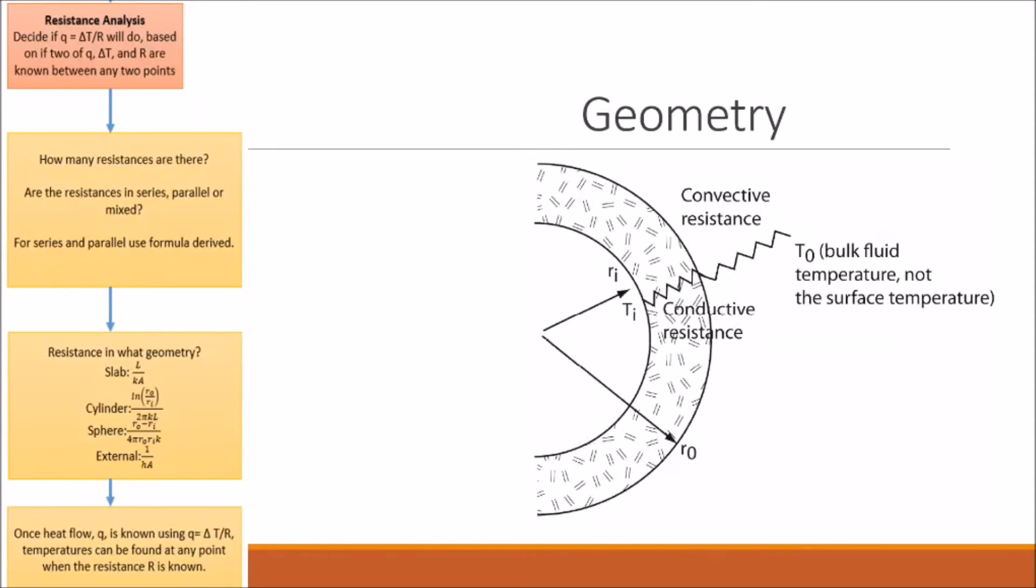Now let's talk about our geometry. So the problem says that we're dealing with a cylindrical geometry. So our conductive resistance must equal our equation for resistance for a cylinder, which is ln R0 over Ri divided by 2πKL, where L is the length of the cylinder into the page. We also know that the convective resistance is equal to 1 divided by the heat transfer coefficient times A, where A is the surface area or the outer surface area of our pipe.